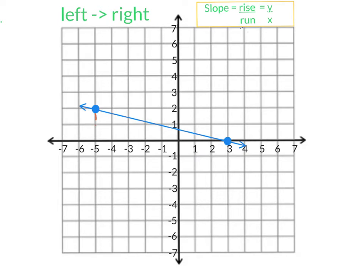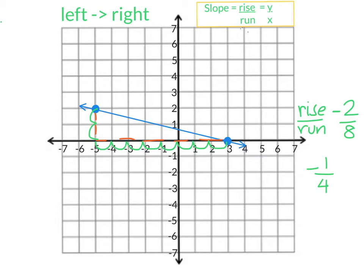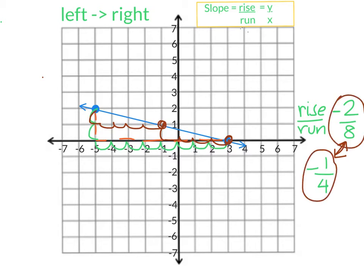We'll trace our route right here. We can see we're going to go down one, two. So my rise is negative two. And from here, we're going to run one, two, three, four, five, six, seven, eight. Now, like before, we can see that we can reduce this to negative one-quarter. Let's check if it's the same thing — if I were to go down one and then run one, two, three, four, we can see we have a point on the line. Remember that a slope that's reduced is the same in value. The points all lie on the same line.